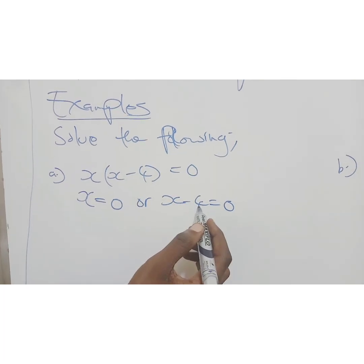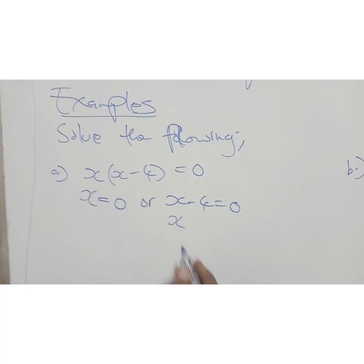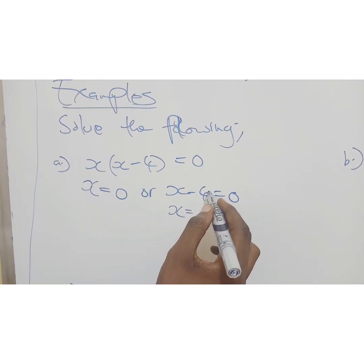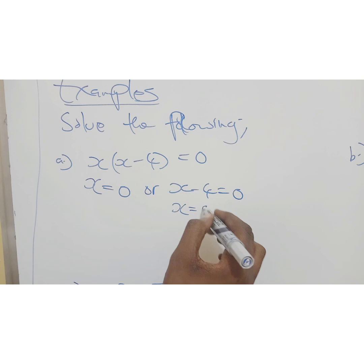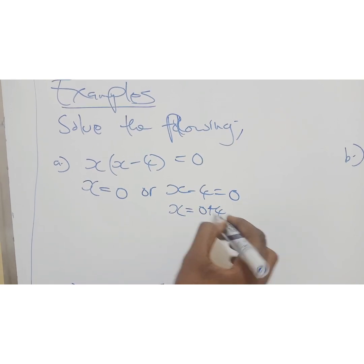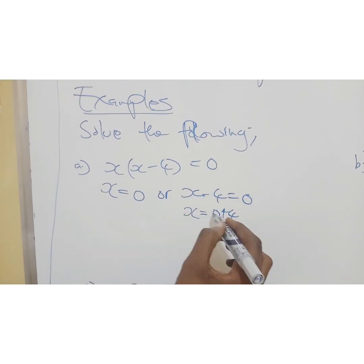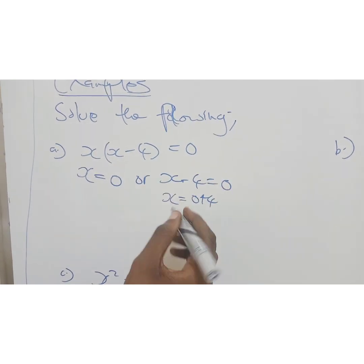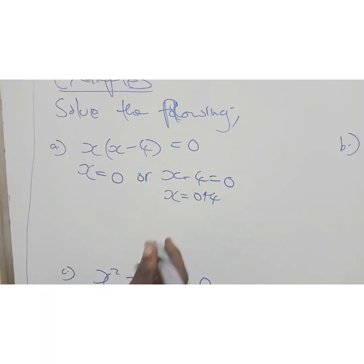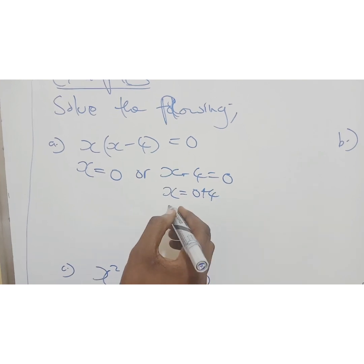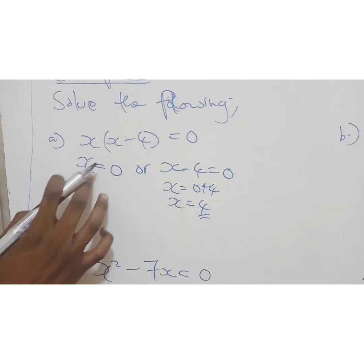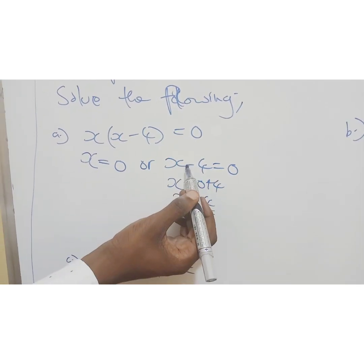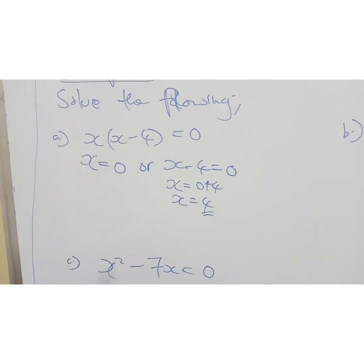Just say x equals 0. You get this x and that's 0. Or x minus 4 equals 0. So x minus 4, it can't because they are like terms. So x equals, we take our 4 across the equal sign. So we have 0 plus 4 because it's a negative. So once it crosses the equal sign, it becomes a positive. So x equals 4. So x equals 0 or x equals 4.